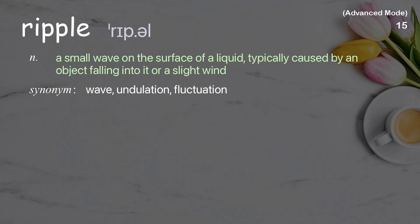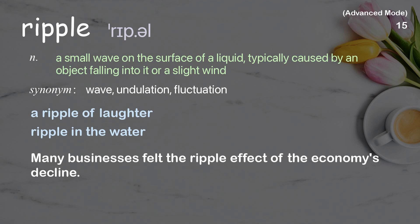Ripple: A small wave on the surface of a liquid, typically caused by an object falling into it or a slight wind. Examples: a ripple of laughter, ripple in the water. Many businesses felt the ripple effect of the economy's decline.